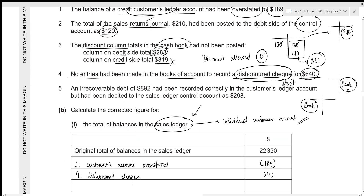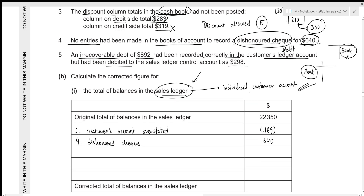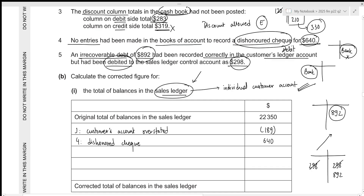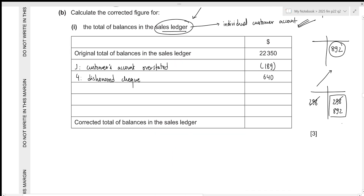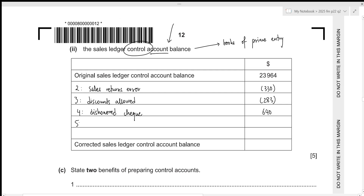The fifth error: an irrecoverable debt of 892 had been recorded correctly in the customer's ledger account, so no change is needed in the sales ledger. However, in the sales ledger control account it had been debited as 298. Irrecoverable debt reduces trade receivables and should be on the credit side. To correct this, we cancel the incorrect debit of 298 and record the correct 892 on the credit side — a total credit adjustment of 1,190. Since the credit side is the decreasing side, we subtract 1,190 from the control account.